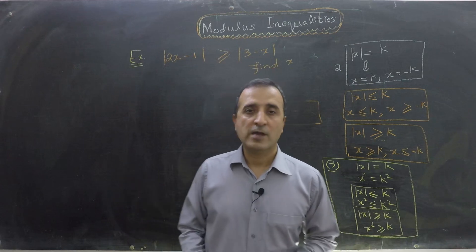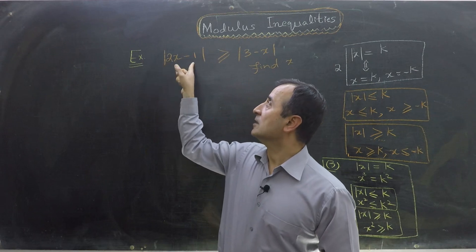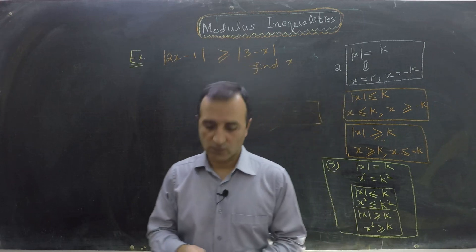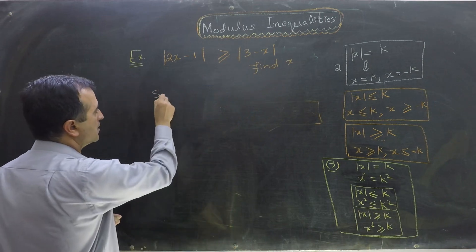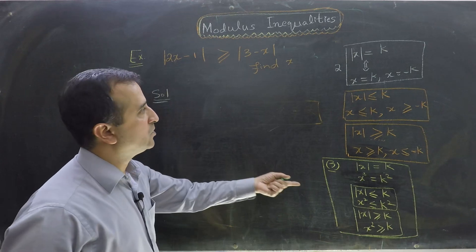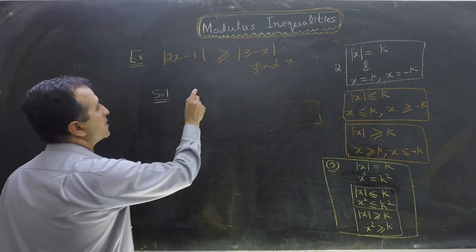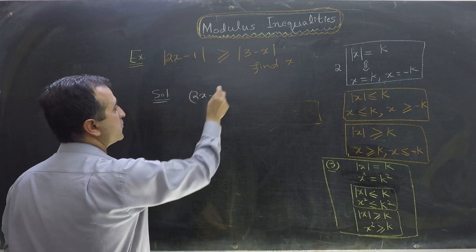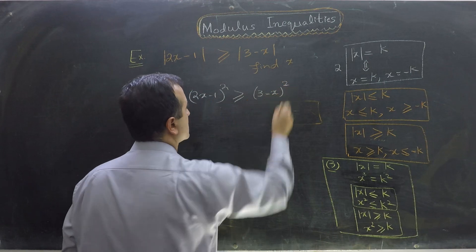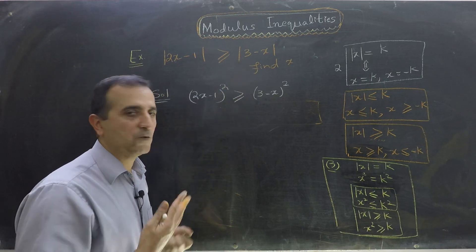Now let's do another example. In the second example we have two mod functions: mod of 2x minus 1 is greater than or equal to mod of 3 minus x, and we have to find x. I will use rule number 3, as it is easier to apply here. So we square both sides: 2x minus 1 whole squared is greater than or equal to 3 minus x whole squared. We can use rule number 3 because both left-hand side and right-hand side are positive.